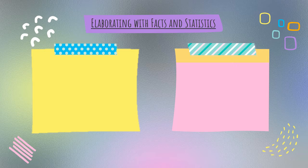So what do I mean by elaborating? That means to fill out your writing, basically. As you're writing, you want to make sure you include lots of good, interesting details. We've just finished a descriptive essay where you had to describe things, so you were including a lot of details about a particular person in that descriptive essay.